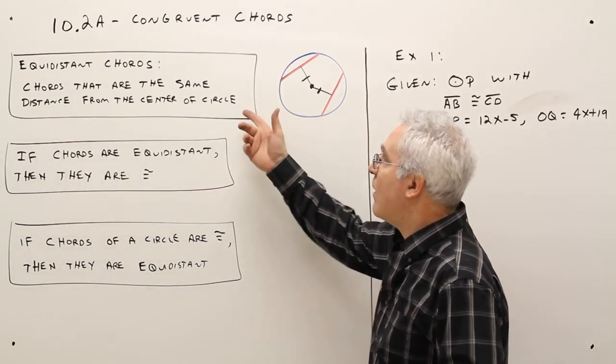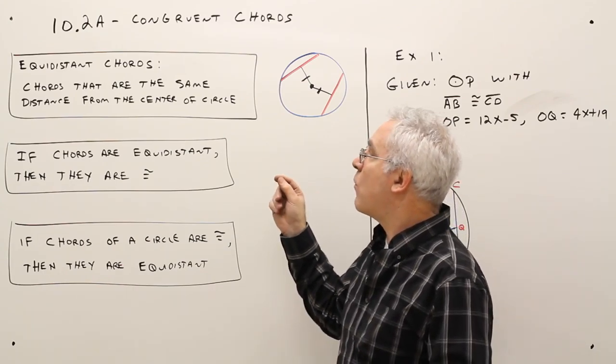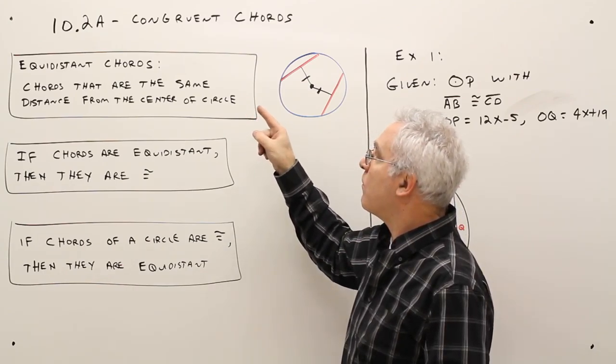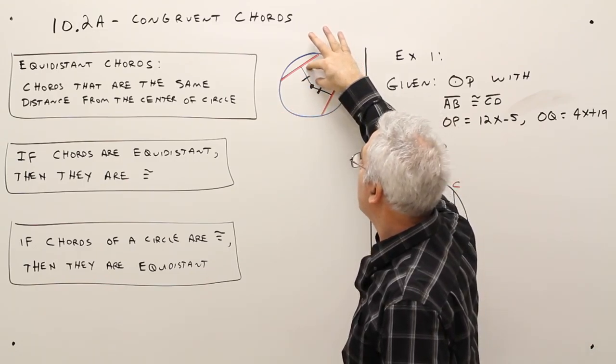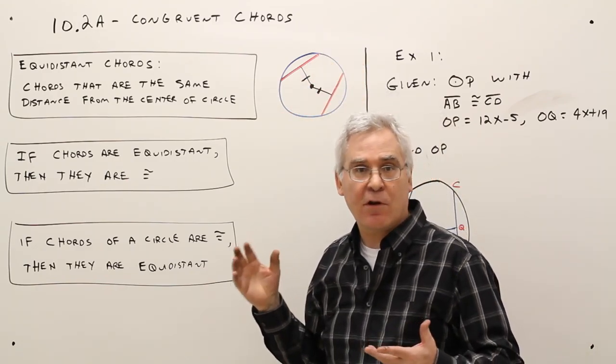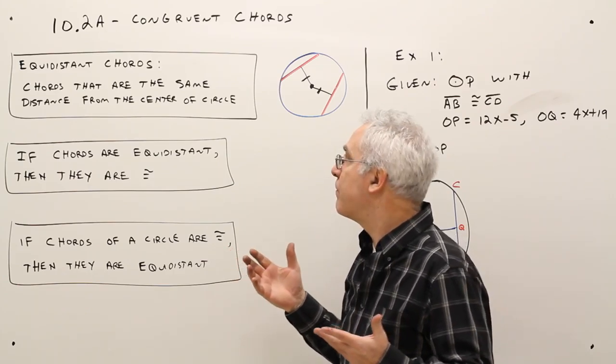Okay, so we've got a definition: equidistant chords are chords that are the same distance from the center of a circle. So here's a chord and here's a chord, this distance and this distance are the same, congruent.